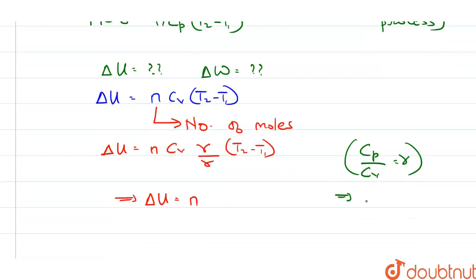We know that Cp upon Cv is equal to gamma. This means that Cp is equal to Cv into gamma, which is what we have here. Therefore, we can write delta U as N into Cp upon gamma into T2 minus T1.